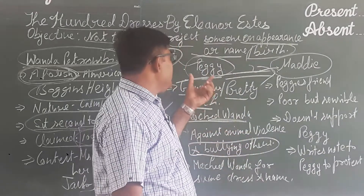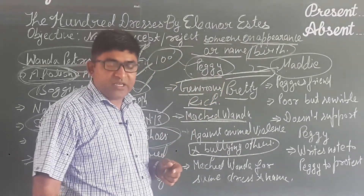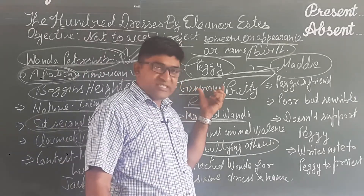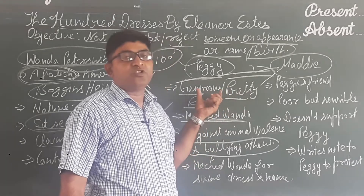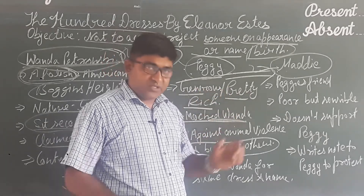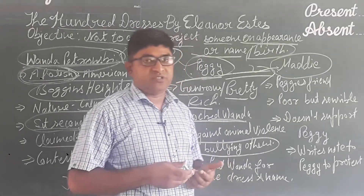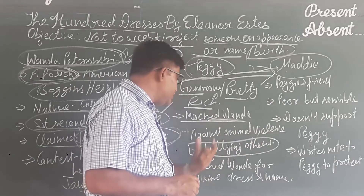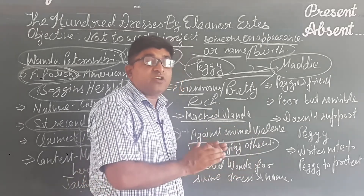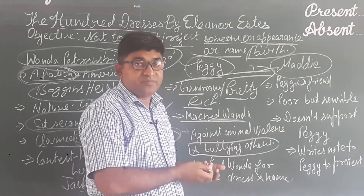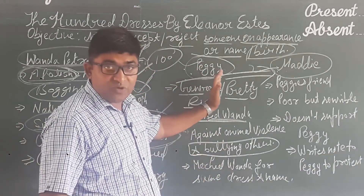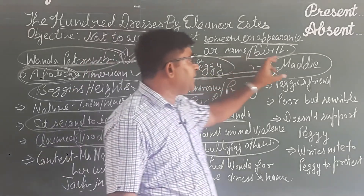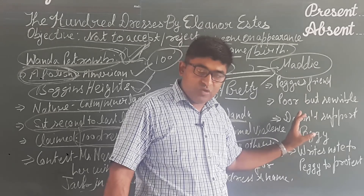Now let us move to Peggy. What kind of girl was Peggy — develop the character sketch of Peggy. Peggy was a generous, pretty girl with beautiful curly hair. But she used to make fun of Wanda Petronsky. On the other hand, she was against violence and against bullying others, and she would protect all the girls from being bullied. She was also a very helpful girl who used to help Maddy at every point in her schooling life.